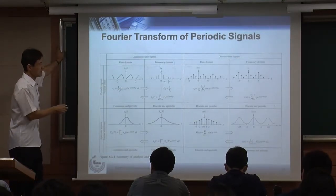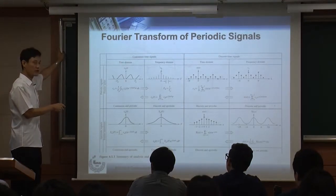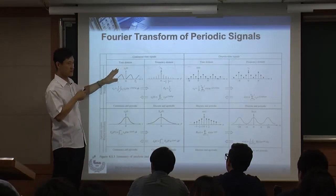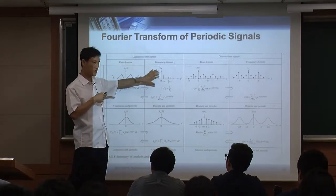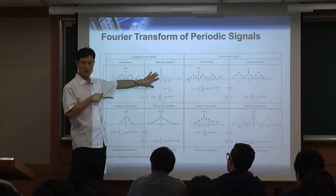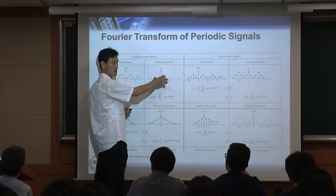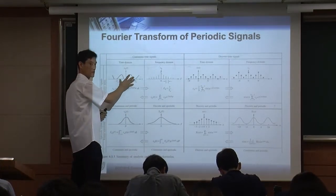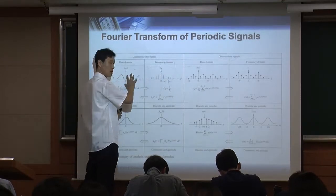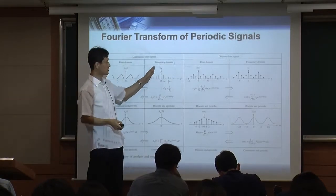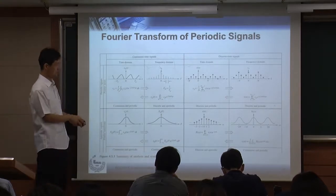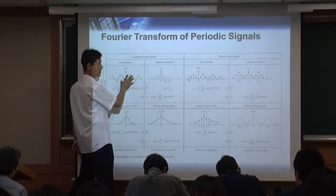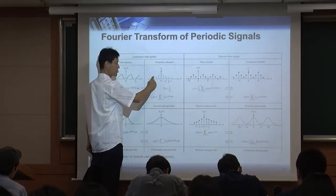Key question: if the time-domain signal is periodic, what happens in the frequency domain? If the time-domain signal is periodic, the frequency domain is going to be discrete. That is very important to remember. You can see this in the picture: a periodic but continuous time-domain signal, after taking the Fourier transform, gives a discrete (not continuous) frequency domain.